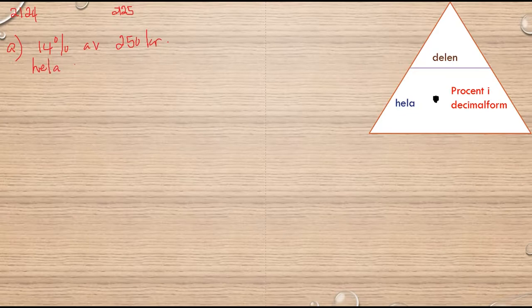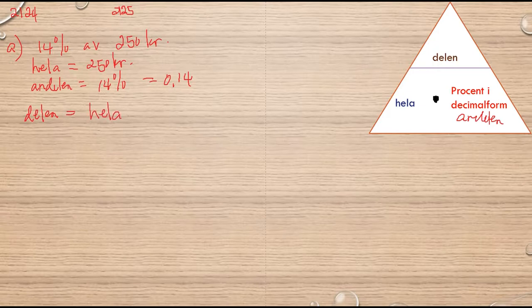Hela, 250 kronor, andelen 14 eller 0.14. Här är andelen. So delen, I multiply hela med andelen i decimal form. Hela som är 250 multiplisar med 0.14. 250 multiplisar med 0.14 får jag 35 kronor.